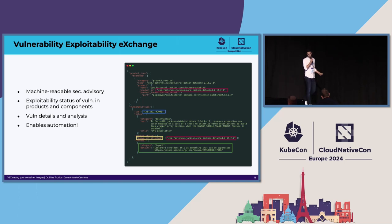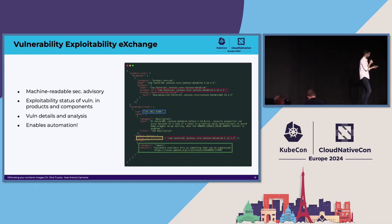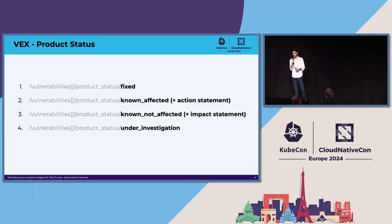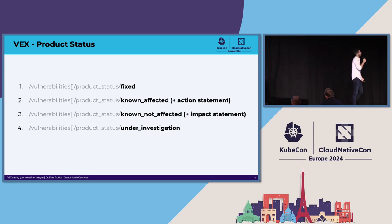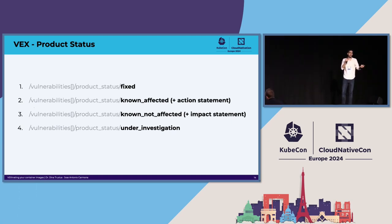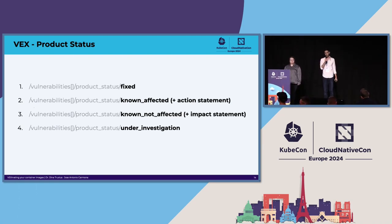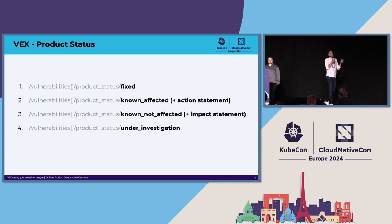VEX provides context and can enable sharing vulnerability details, analysis, exploitability status, and more. One more thing to recall: VEX is not only meant to say that something is not affected. VEX is all about context. You can use a VEX statement to say something was fixed, something is affected and what to do about it, something is not affected and the reason why, or maybe we don't know yet and we are still investigating — but we state that we are aware and investigating. So I've covered what VEX is, and I'll hand it over to Dina. She will cover what CSAF is.